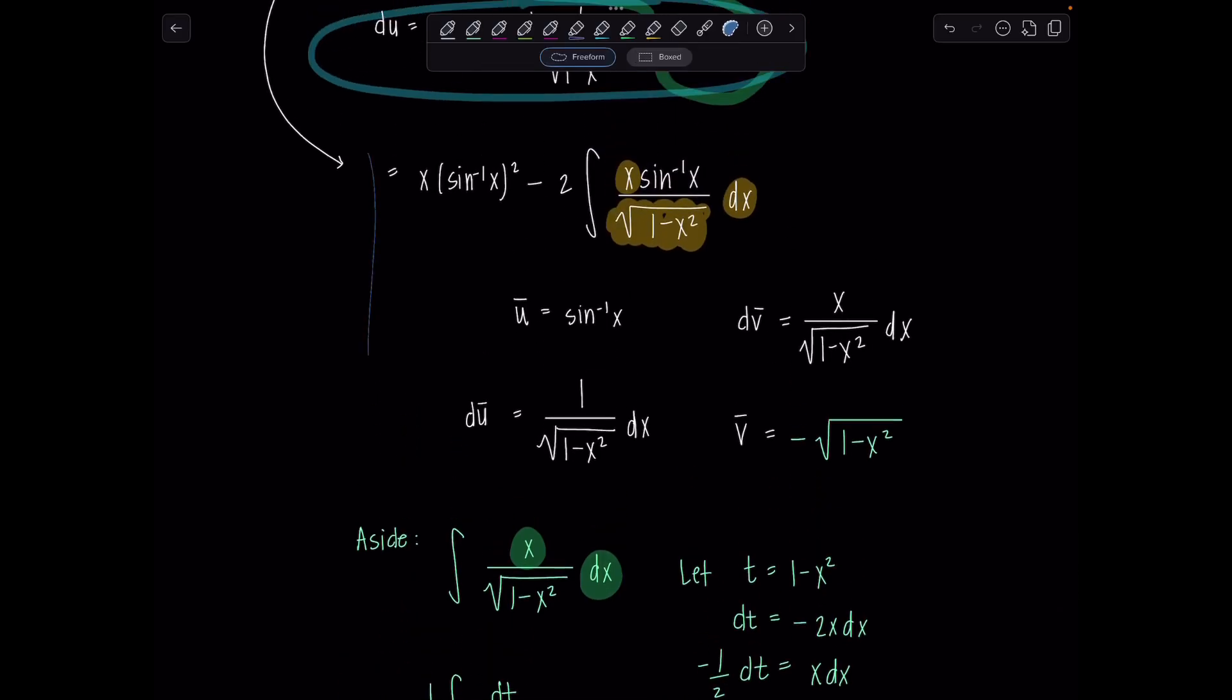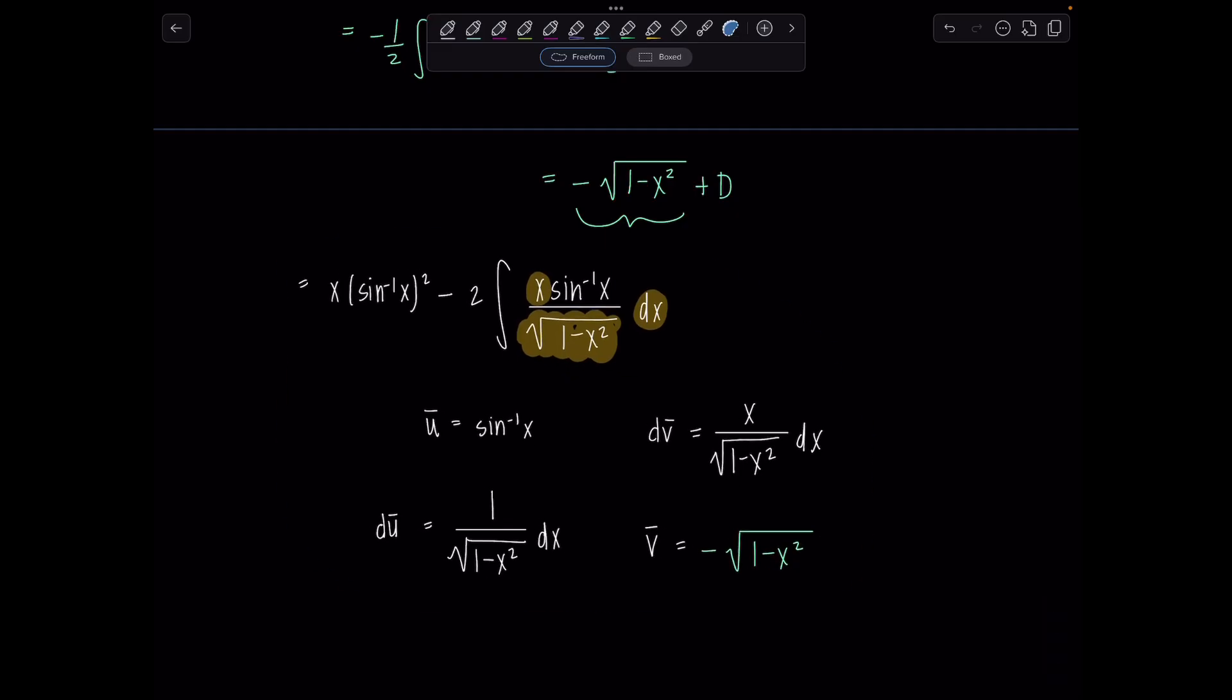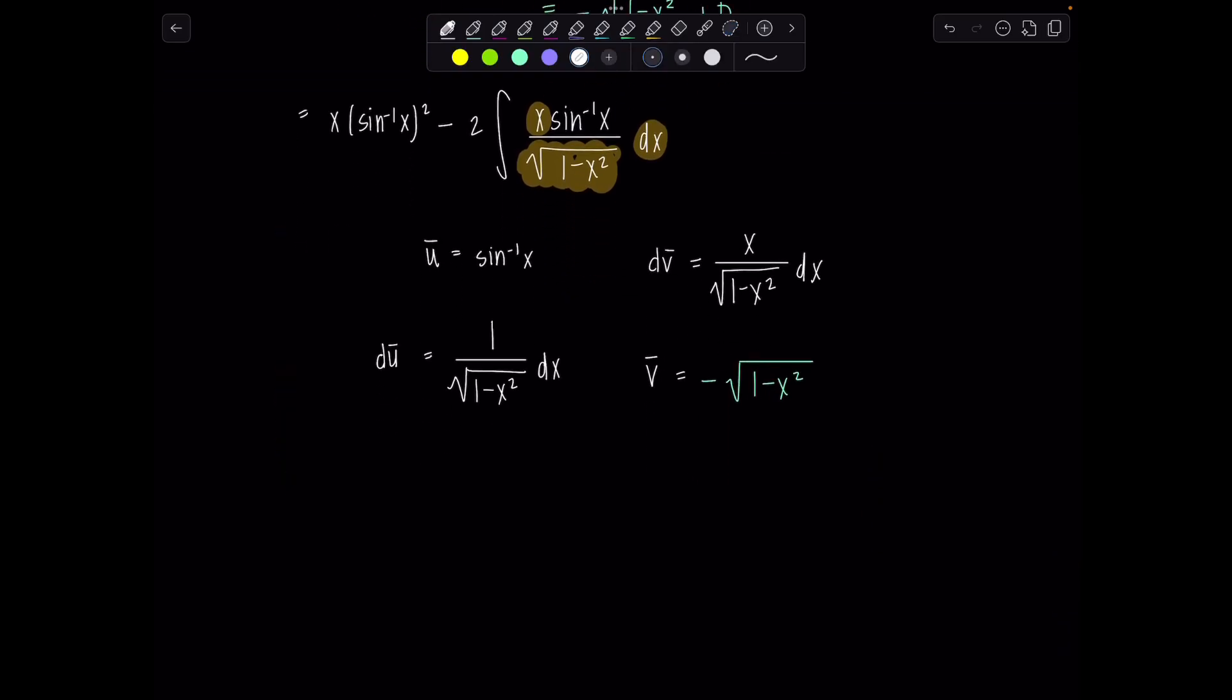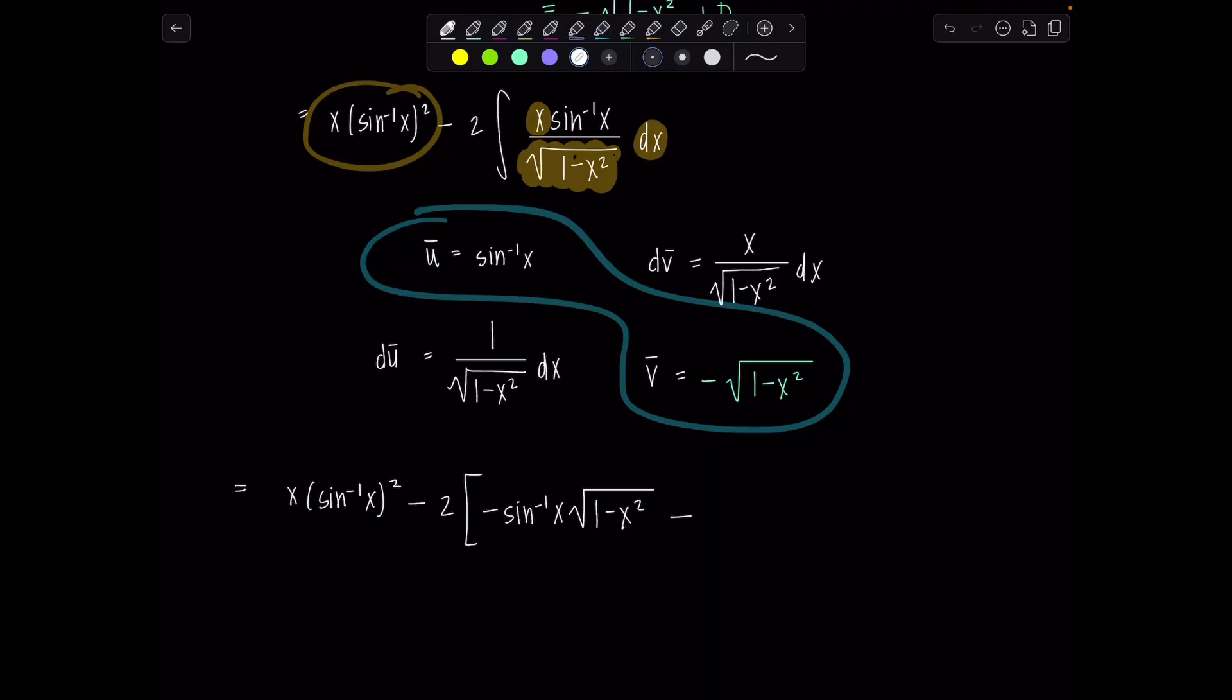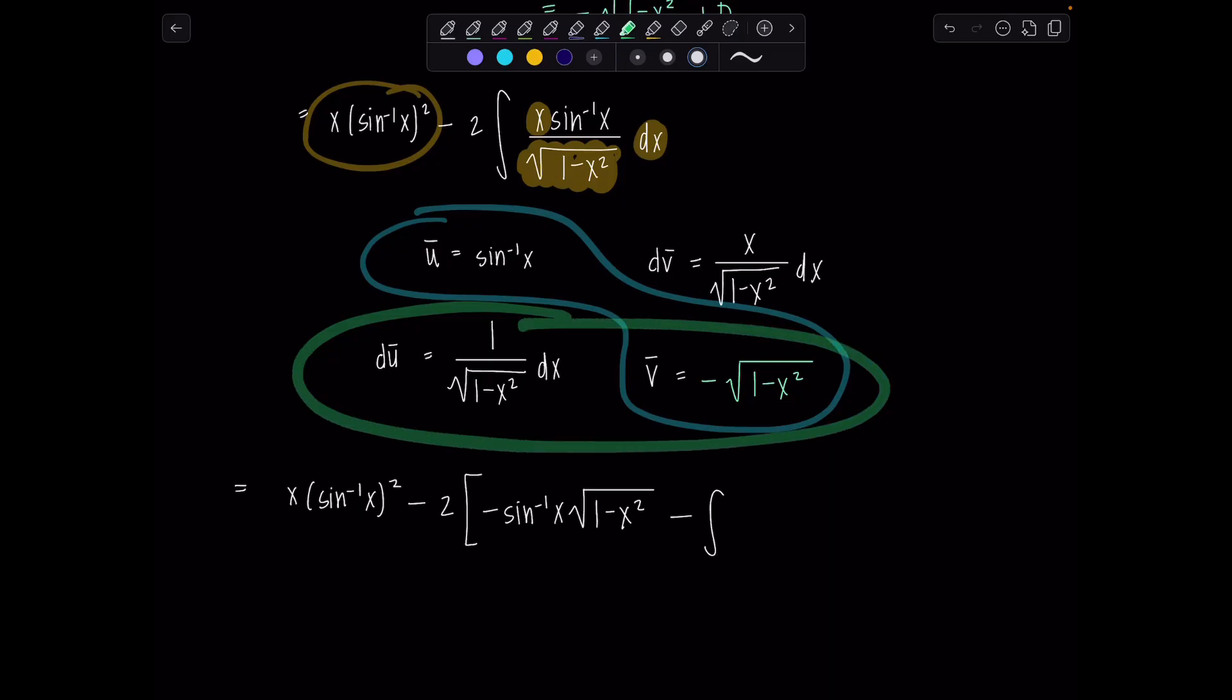Now let me copy down what we've done from earlier. That way we can reference it as we finish off the problem. Okay so now what do we have? Don't forget this cute little x sine inverse of x squared sitting out front. Write the whole problem as you go. All right minus two and I'll distribute that in just a moment. Don't worry. Again now we have u bar v bar. So I'll put negative sine inverse of x square root one minus x squared minus integral and this time we have du bar v bar. Well see how there's another minus sign right here? So that'll switch this to be plus.